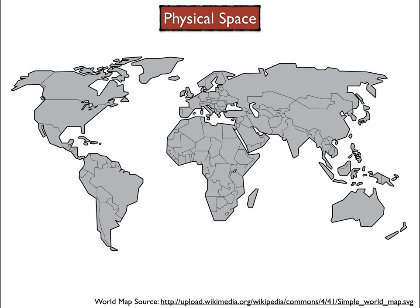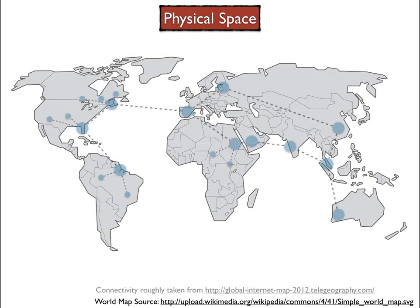The physical space in which the different machines exist is spread throughout the world, with different machines on different continents. On this image, we're representing the different machines as the smaller dots on that world map, and the bigger dots are routers that participate in routing messages on the backbone of the Internet.